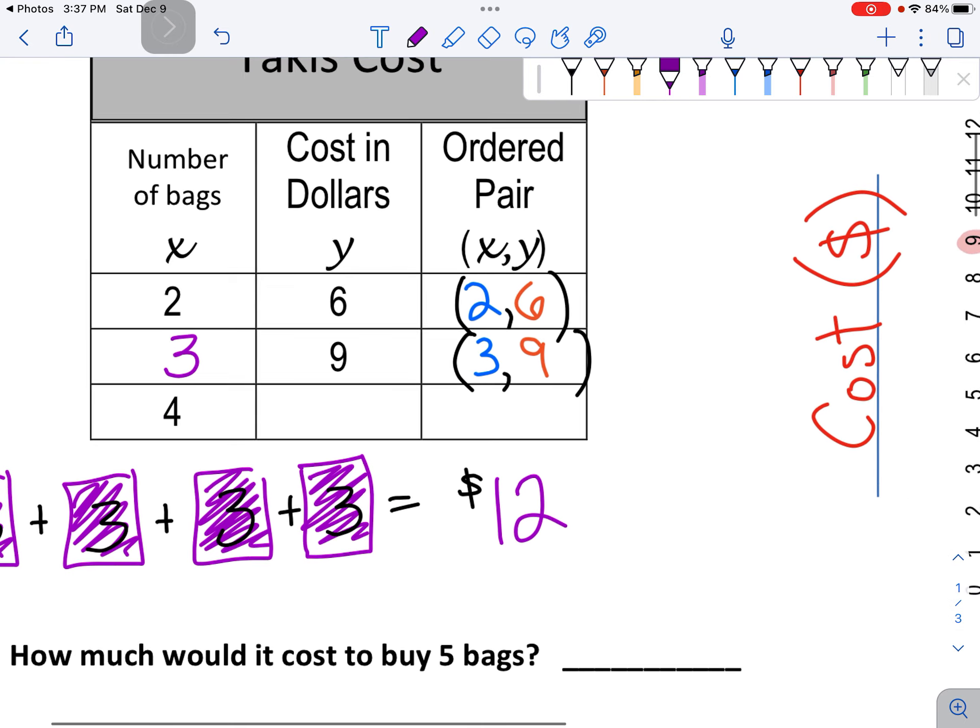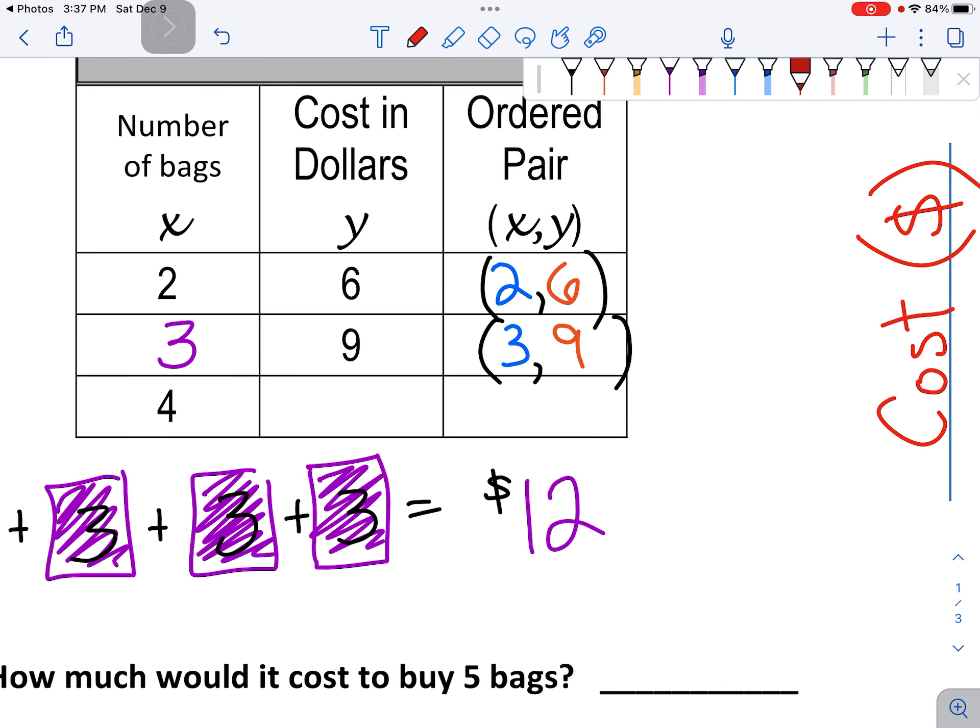So I need to put a 12 in my table. So this is four, comma, twelve. Four and twelve separate with a comma.